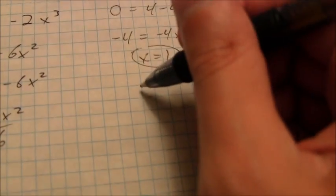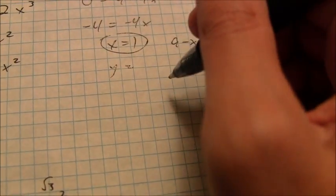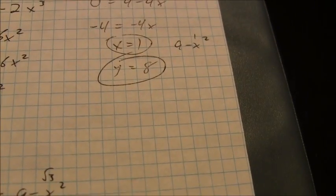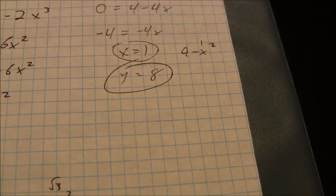And so when x is equal to 1, y, of course, is 9 minus x squared, which is going to be 9 minus 1, which is 8. And that is my final coordinate in that case.